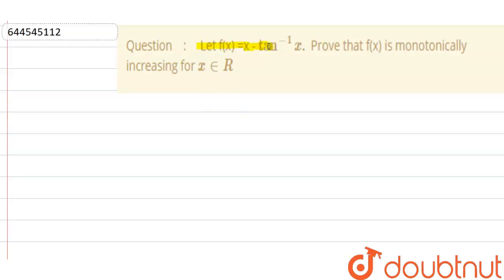Hello everyone, so our question is: Let f(x) equals x minus tan inverse x. Prove that f(x) is monotonically increasing for x belongs to R.